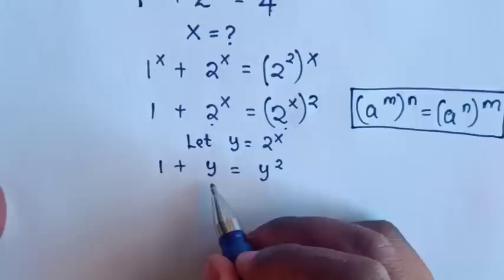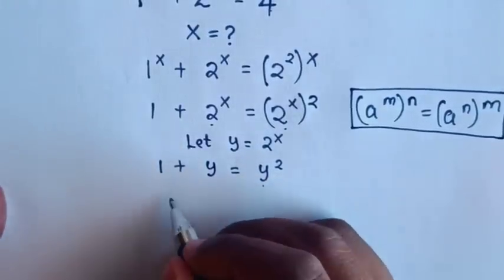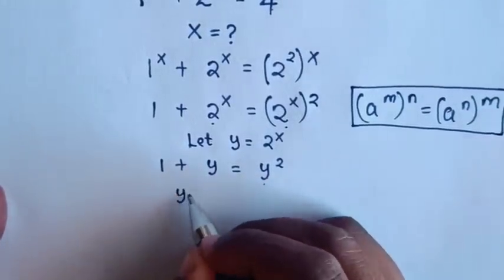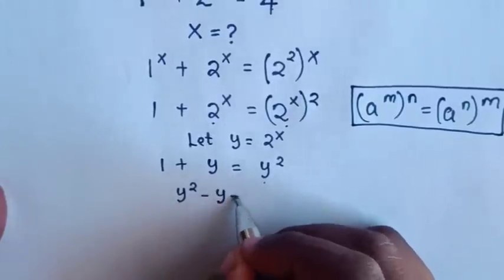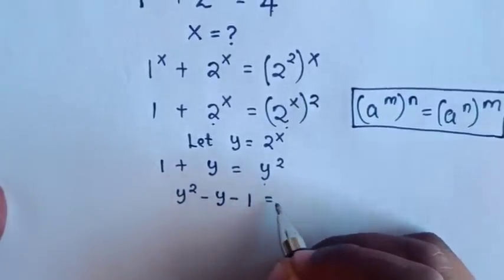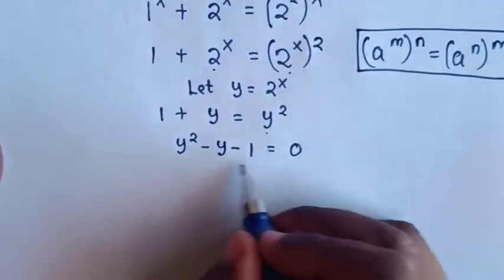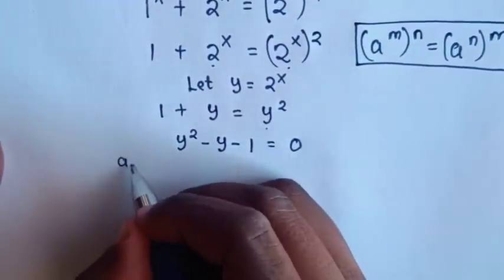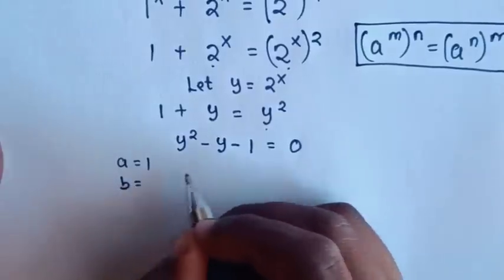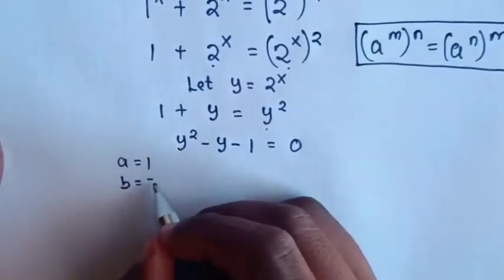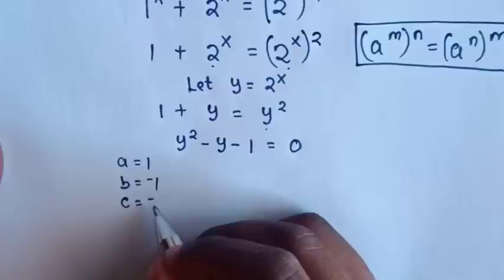Then we take terms to the right side, so it will be y squared minus y minus 1 is equal to 0. To solve this quadratic equation, a is equal to 1, b is equal to negative 1, and c is equal to negative 1.